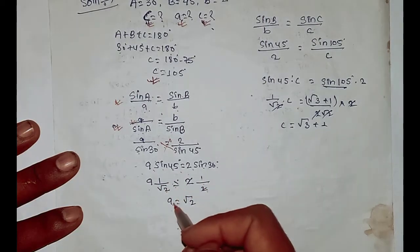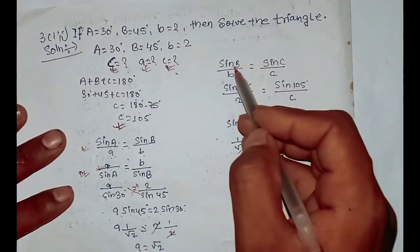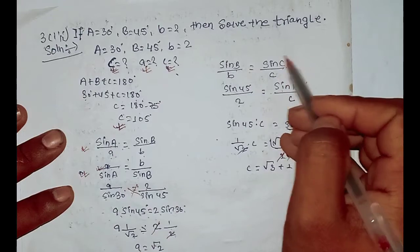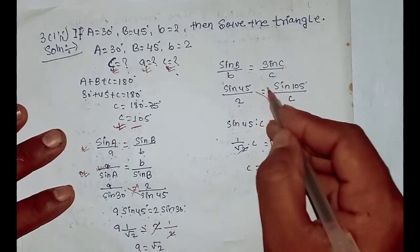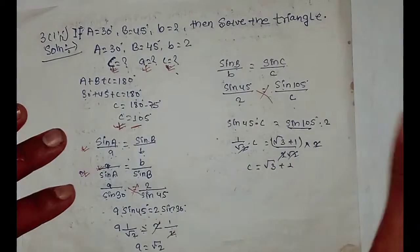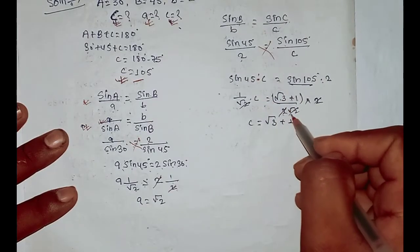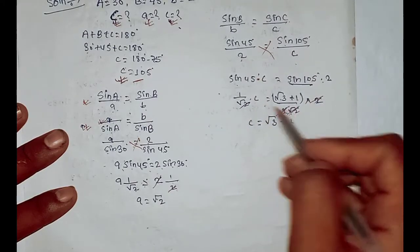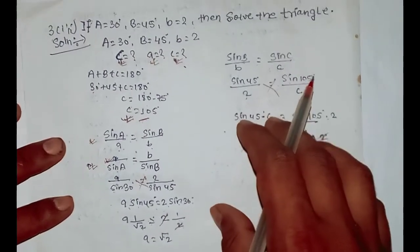Sin 30 is equal to 1 by 2. The 2 and 2 cancel out, giving a equals root over 2. Now for side c, using sin B divided by b equals sin C over c: sin 45 degrees by 2 equals sin C over c. With sin 45 degree values and simplification, c equals root over 3 plus 1.